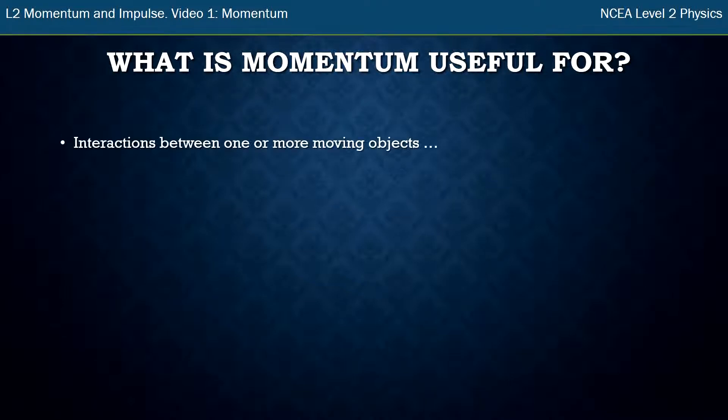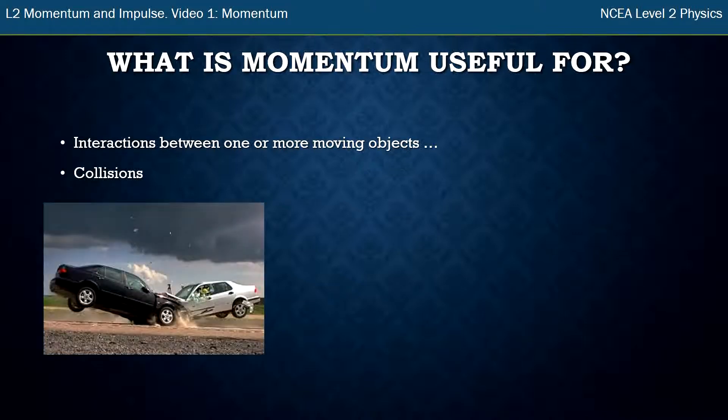Okay, so momentum is useful for when there's interactions between one or more moving objects, and the obvious interaction is collisions. So a collision between two moving cars.